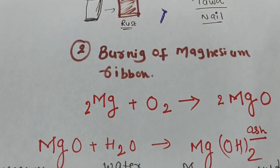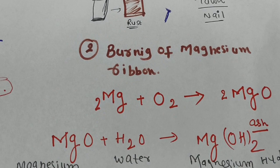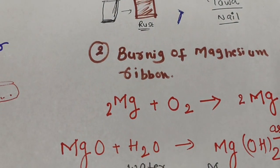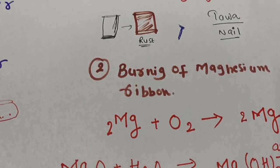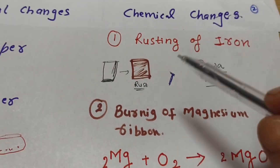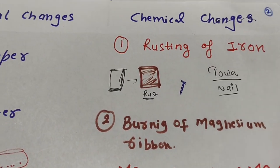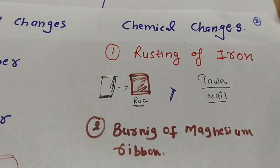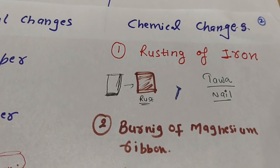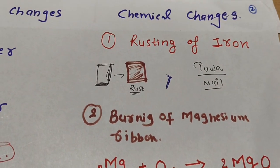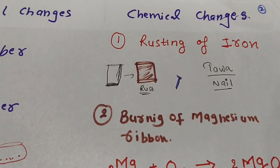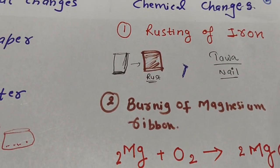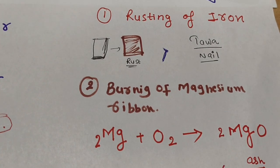So the burning of magnesium ribbon is an example of a chemical change. For chemical changes, you have to learn some important examples: first, rusting of iron; next, burning of magnesium ribbon.